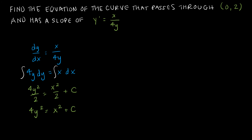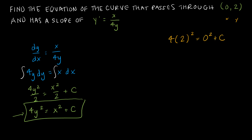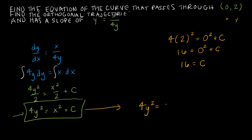If they just asked for the general solution, that would be it. To find the equation of the curve, we're going to use the general solution and solve for C. It passes through (0, 2), so 4 times 2 squared equals 0 squared plus C. 4 times 2 squared is 16, and 0 squared plus C means C equals 16. So the equation of the curve that passes through the point (0, 2) is 4y squared equals x squared plus 16, or more typically, 4y squared minus x squared equals 16.